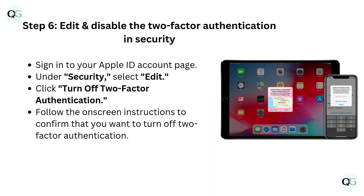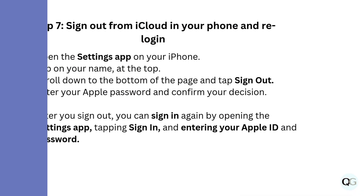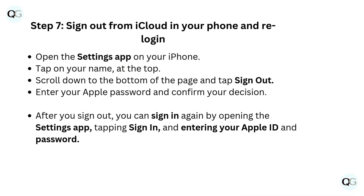Step 6: Edit and disable the two-factor authentication in Security. Sign in to your Apple ID account page. Under Security, select Edit. Click Turn off two-factor authentication and follow the on-screen instructions to confirm that you want to turn it off.